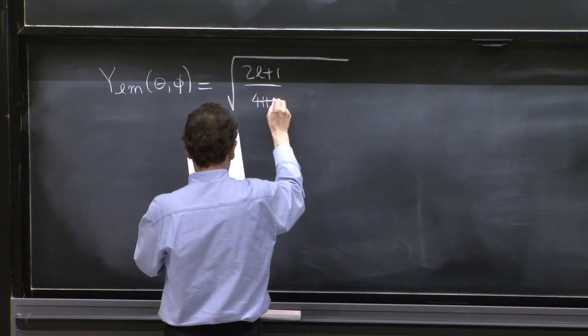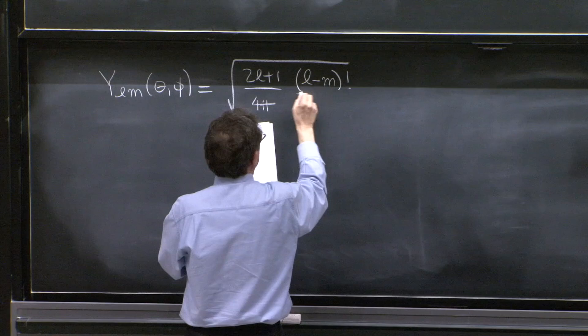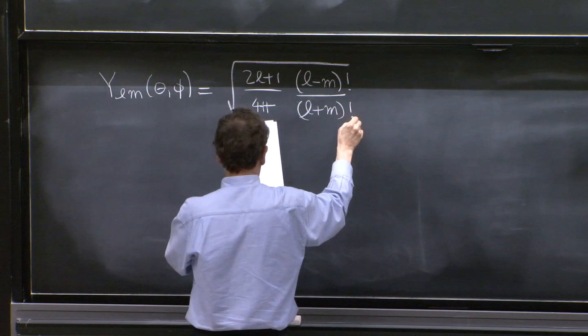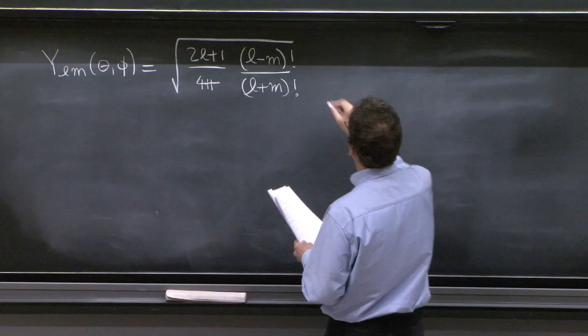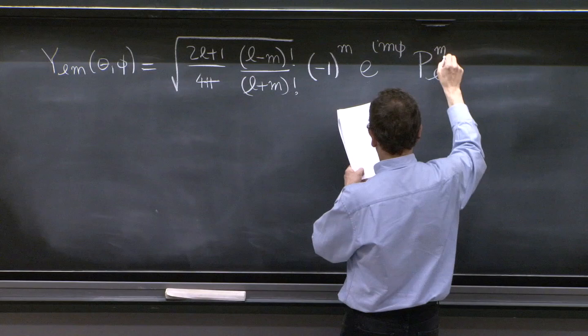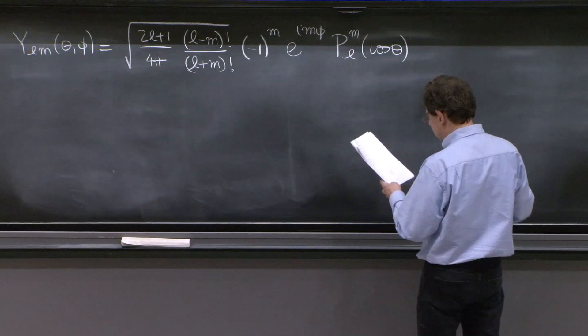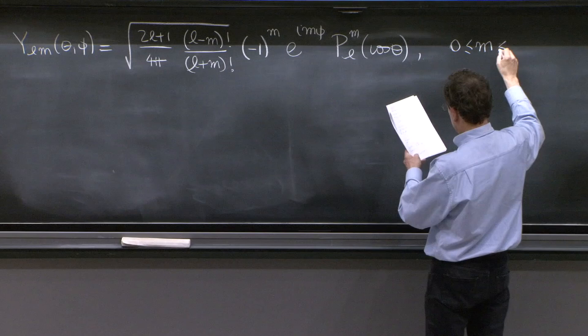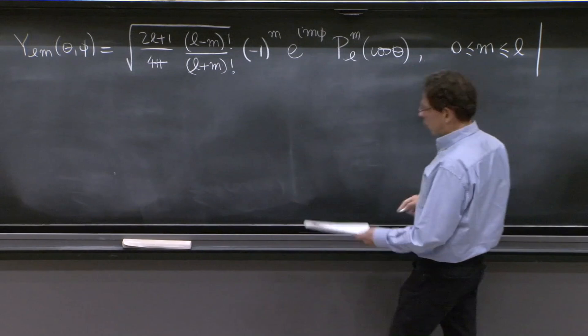All of that. So that's then a minus 1 to the n. It's useful. E to the i m phi plm of cosine theta. And this is all valid for 0 less than m positive m. When you have negative m, you must do a little variation.